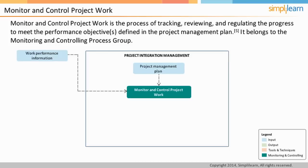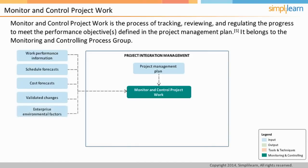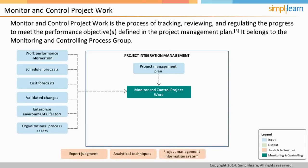Along with the work performance information, forecasts related to cost and time form important inputs upon which the project manager has to act. Validated changes confirm that approved changes have been appropriately incorporated. Enterprise environmental factors and organizational process assets are also inputs. Expert judgment, analytical techniques, project management information system, and meetings are the various tools and techniques. One of the outputs of this process area is change requests, which could be in the nature of corrective and preventive actions or defect repair.